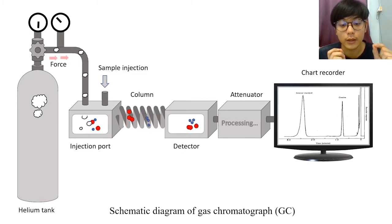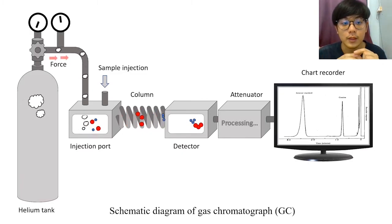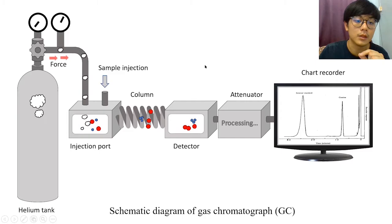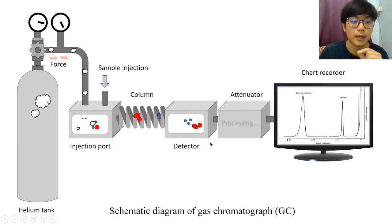So here we show the schematic diagram of the gas chromatography. The first part will be at the injection port, second part separation will be at the column, and the detection will be at the detector.